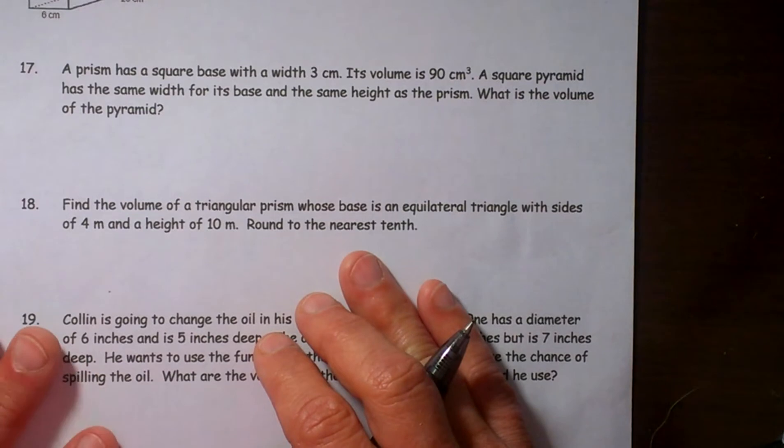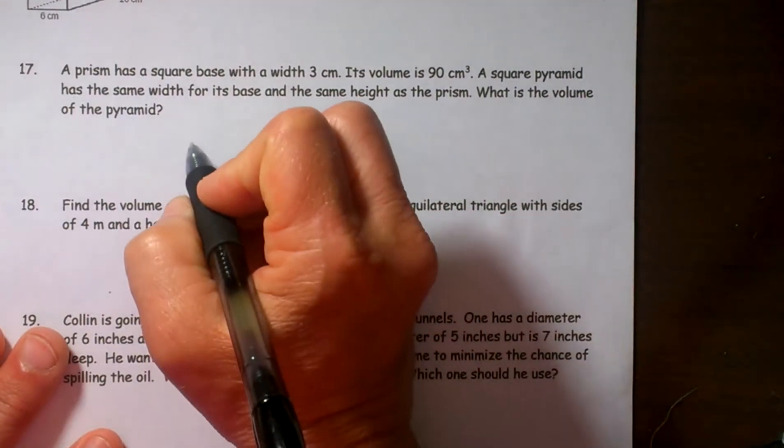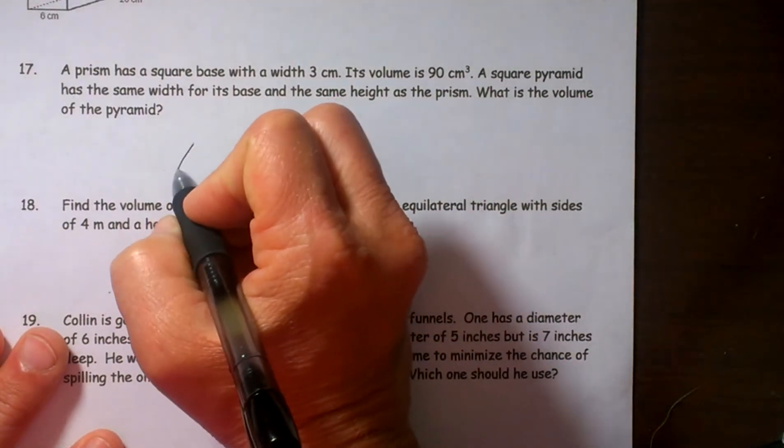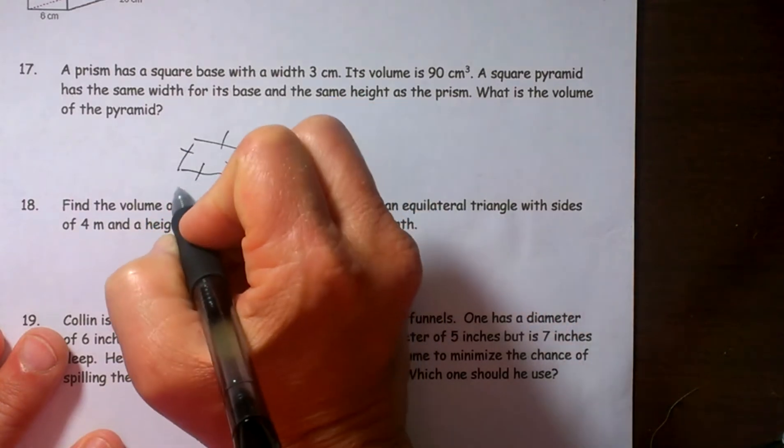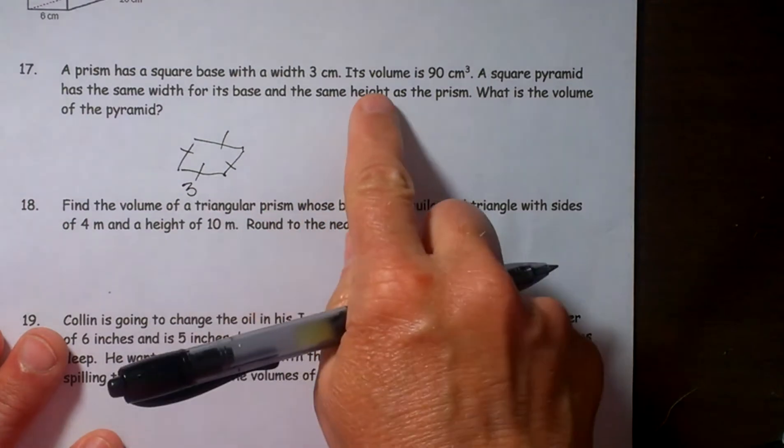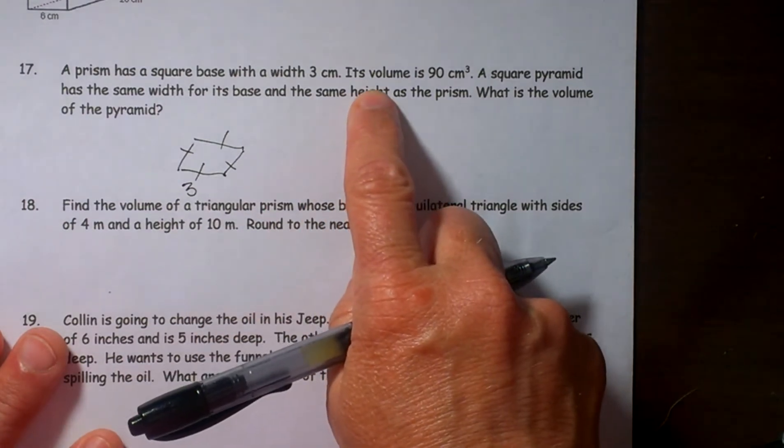Let's see. A prism has a square base with each side of 3. The volume is 90.